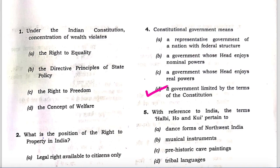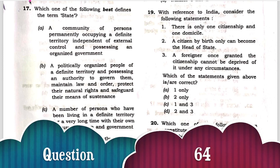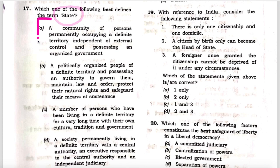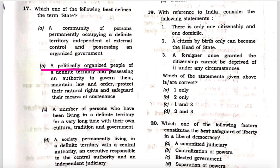Next question: Which of the following best defines the term 'state'? Four options are given. State is not a community of persons, not a number of persons, not a society. A state is a politically organized people of a definite territory. Now you can best define the term state by taking India as an example.